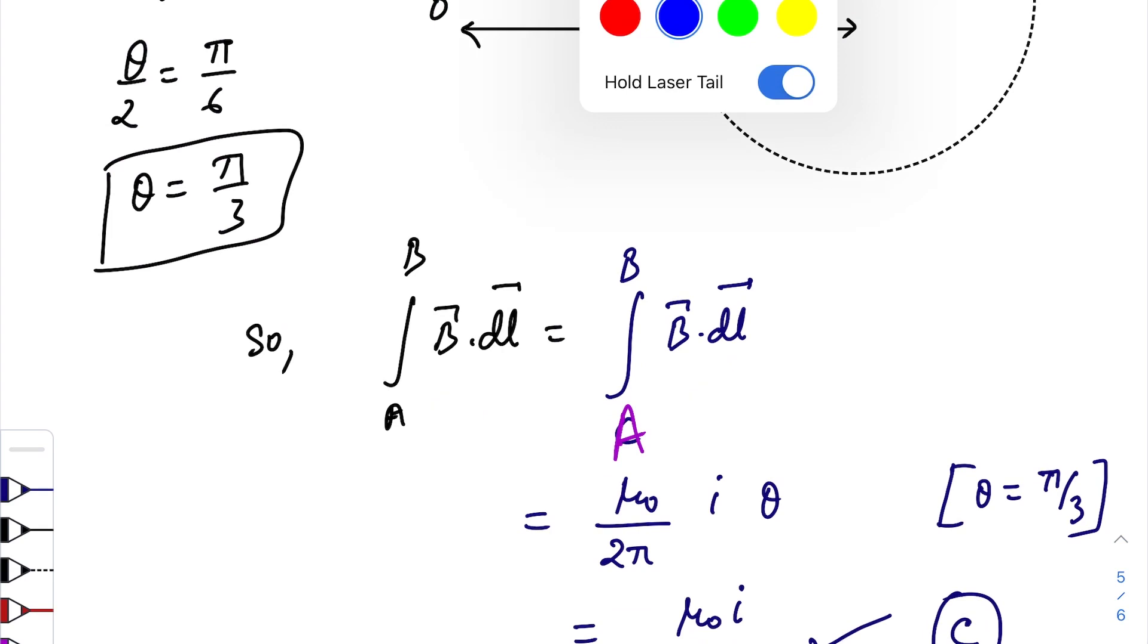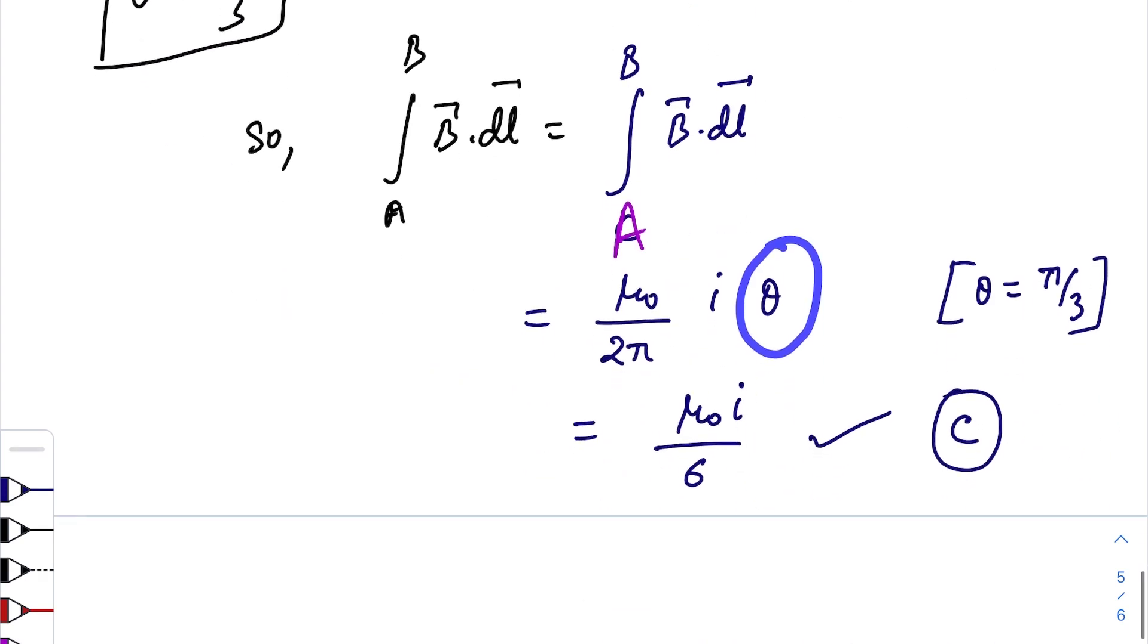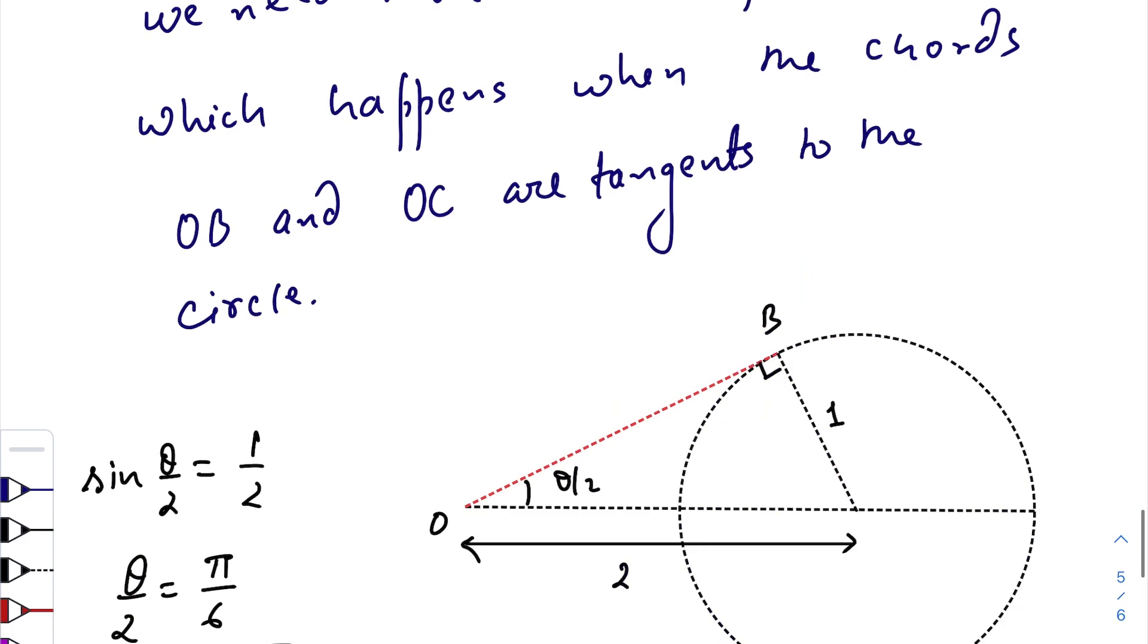This is for path 1, this one is for path 2. Just put the value of π/3, we get μ₀i/6. So option C is the correct answer.